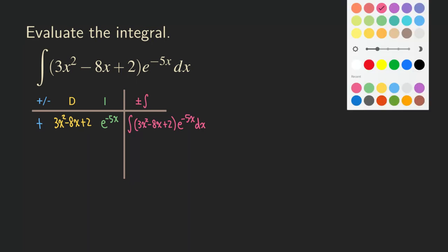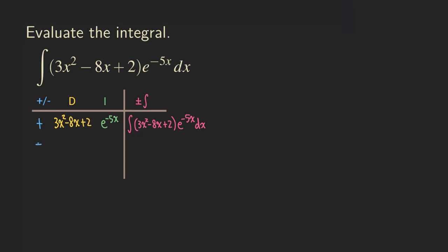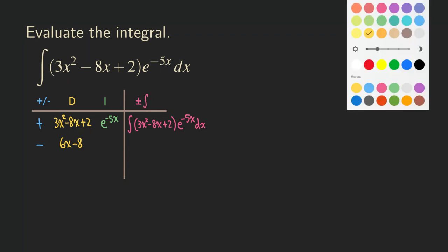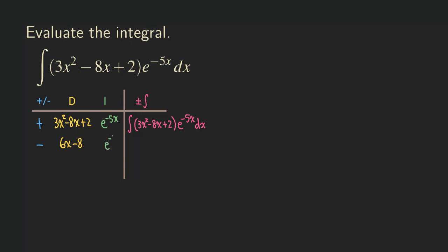Now we do the first iteration. We alternate the sign, so this row gets a minus sign. Differentiating the second-degree polynomial 3x² − 8x + 2 gives us 6x − 8; the constant 2 disappears. Then integrating e^(−5x), we multiply by the reciprocal of the coefficient to reverse the chain rule, giving us (−1/5)e^(−5x).